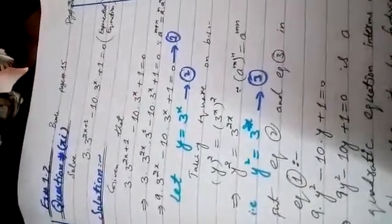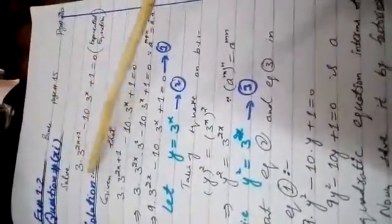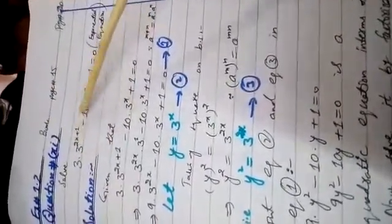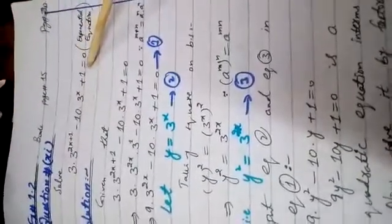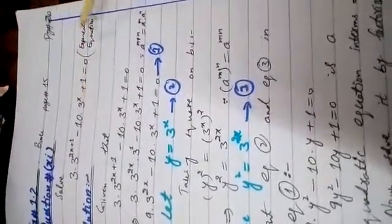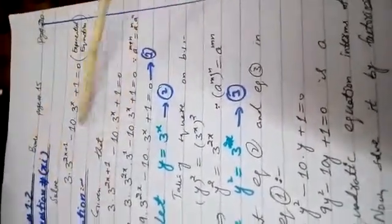Exercise 1.2, question number 11. Solve 3 into 3 power 2x plus 1 minus 10 into 3 power x plus 1 equal to 0. Ab ye equation hummare paas exponential equation hai. Isko ab hamne pehle quadratic equation me change karna hai, uska solution find karna hai.